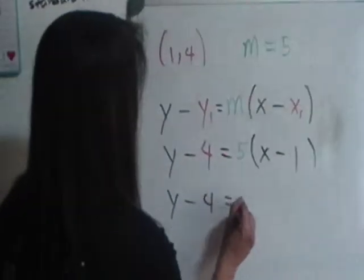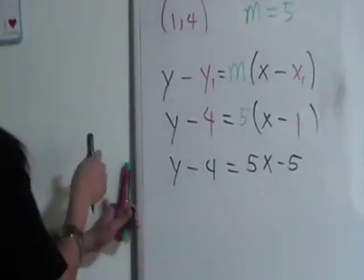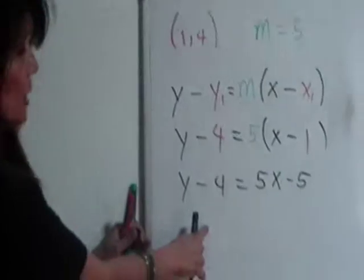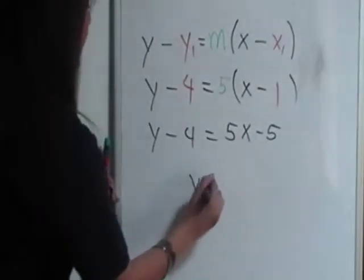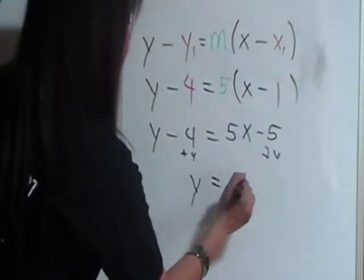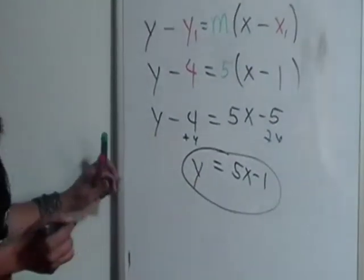So what we can do is distribute the 5 to get 5x minus 5. If we're interested in the slope-intercept form, we want y to sit by itself on the left side, so we can add 4 to both sides of the equation to get y equals 5x minus 1. So this is your slope-intercept form.